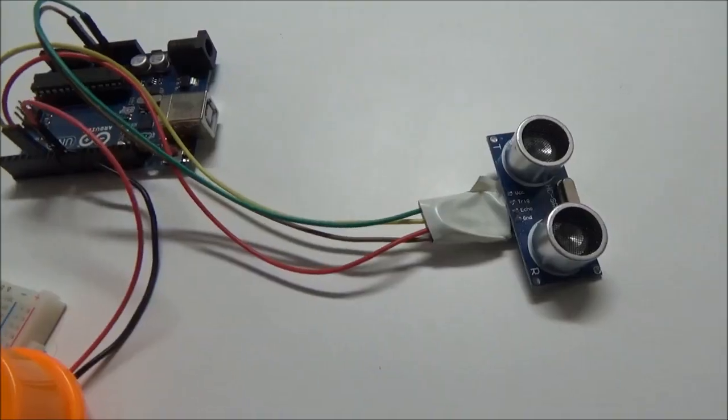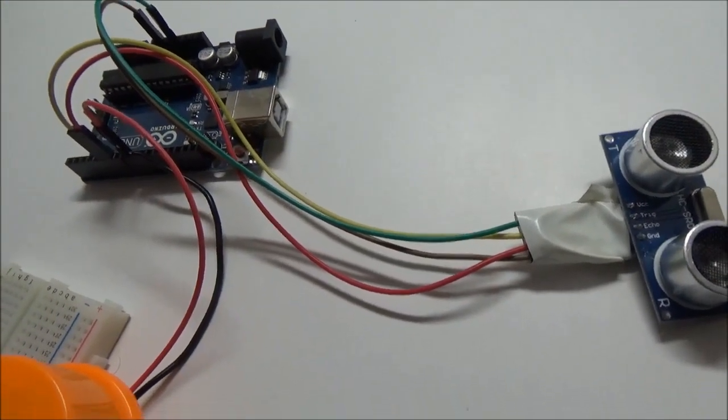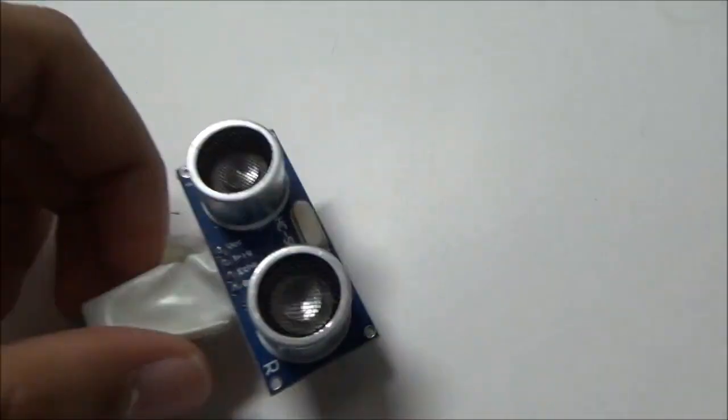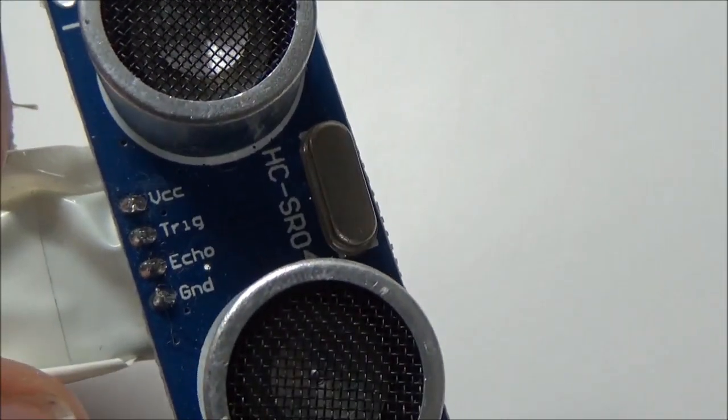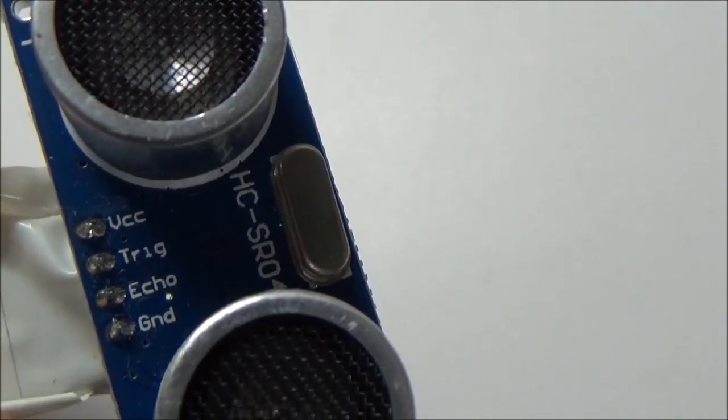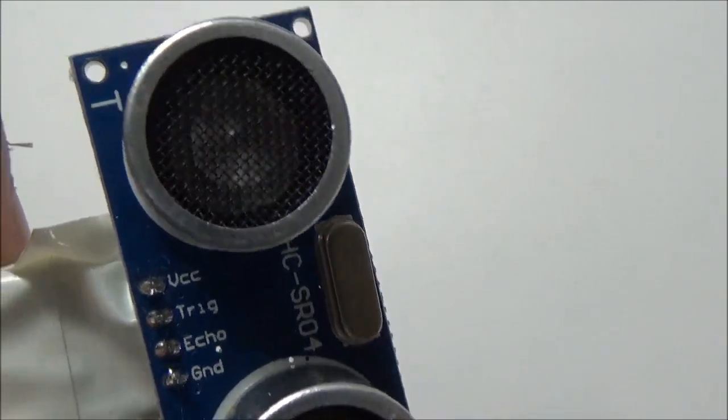Now I'll just quickly show you. I've connected the entire circuit, so I've connected the VCC or the positive terminal of the ultrasonic sensor to the 5 volts pin on the Arduino. I've connected the trigger pin to pin number 5 on the Arduino.